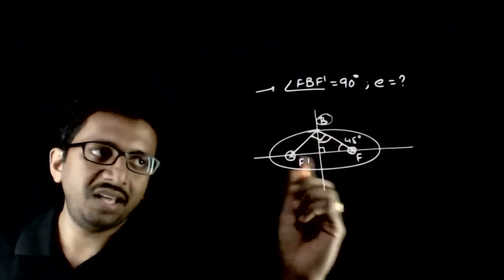So tan 45 is equal to BE by AE. This is center, the distance between the center and focus is ae, the distance between the center and the extremity of minor axis b.